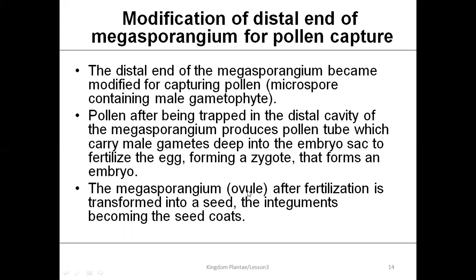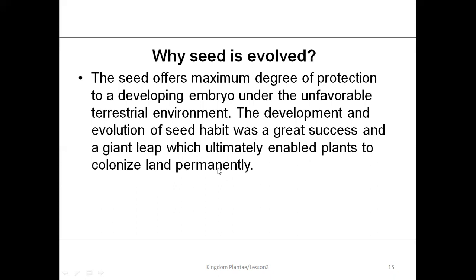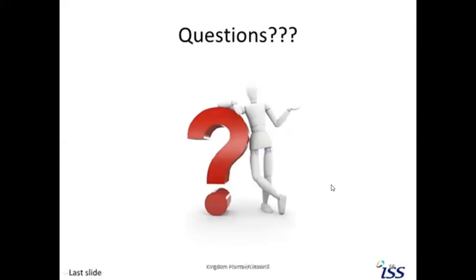The ovule — the integumented megasporangium — after fertilization forms the seed, and the integuments will form the seed coat. Seeds evolved because they offer the maximum degree of protection to the developing embryo under harsh terrestrial conditions. The development and evolution of the seed habit was a great success that ultimately enabled plants to colonize land permanently.